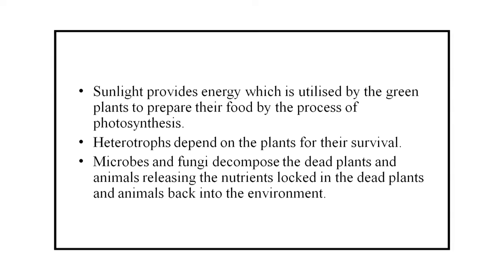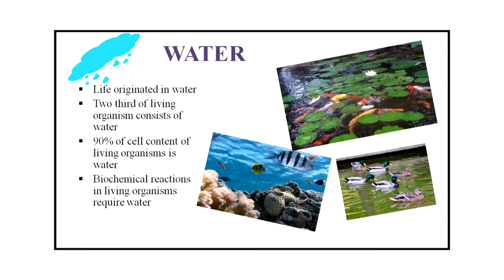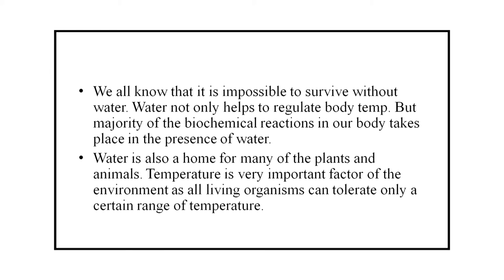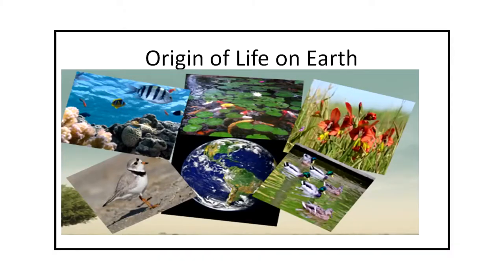Sunlight provides energy which is utilized by the green plants to prepare their food by the process of photosynthesis. Heterotrophs depend on the plants for survival. Microbes and fungi decompose the dead plants and animals, releasing the nutrients locked in the dead plants and animals back into the environment. We all know that it is impossible to survive without water. Water not only helps to regulate body temperature, but majority of the biochemical reactions in our body take place in the presence of water. Water is also a home for many of the plants and animals. Temperature is a very important factor of the environment as all living organisms can tolerate only a certain range of temperature. Thus, there is a very delicate balance between the biotic and abiotic components of the environment.